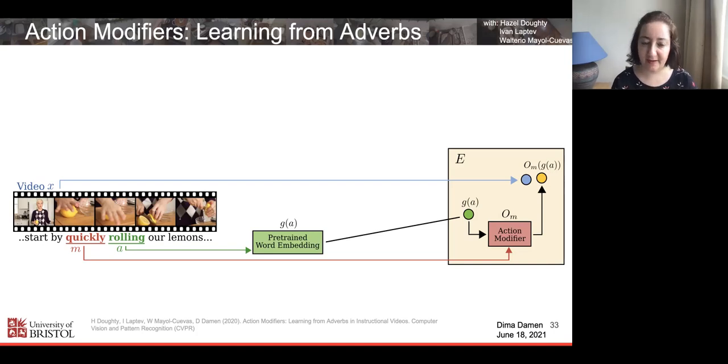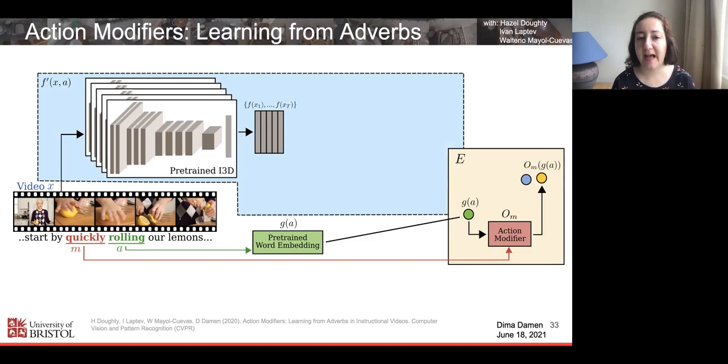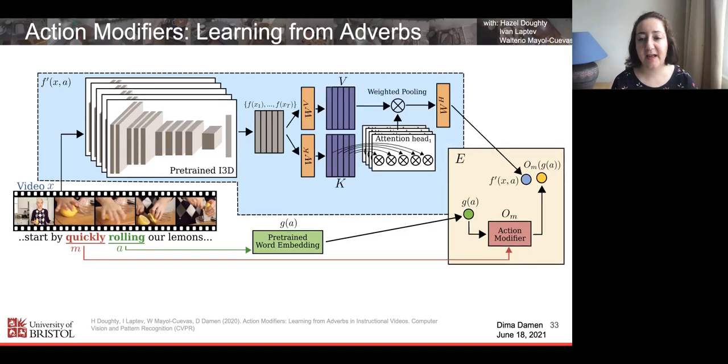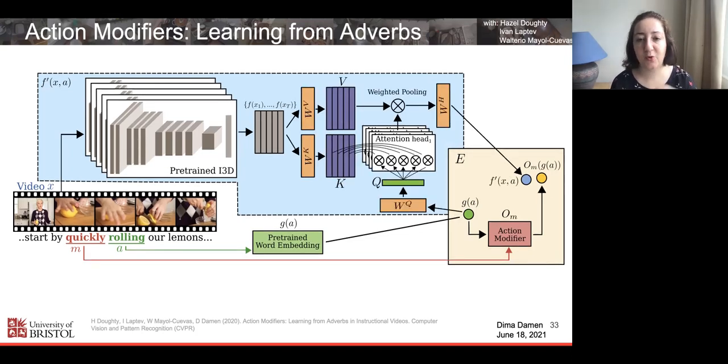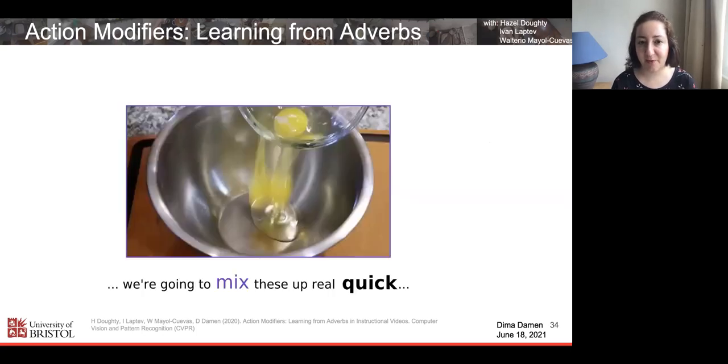We have features of the video around the sentence, and we're using the verb as a query to attend to the parts of the video relevant to the action rolling, which is then embedded close to the learned modifier, learned modified verb into rolling quickly. I'll show you some examples.